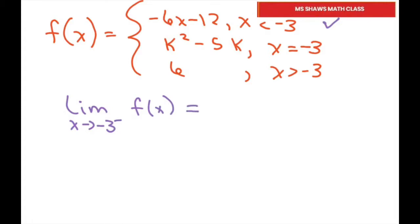That should equal, if it's continuous, the limit as x approaches negative 3 from the right, and that's this portion. So the right is right here.